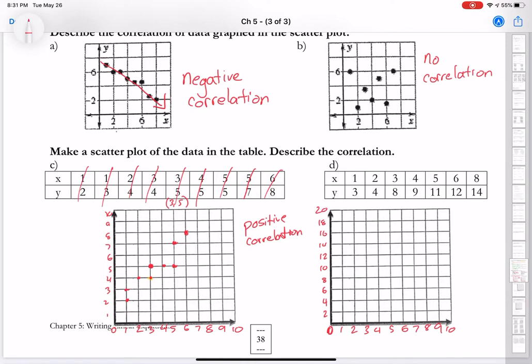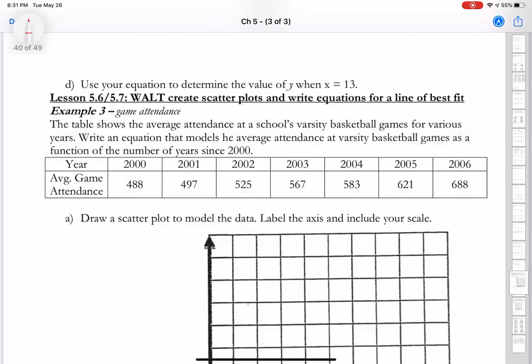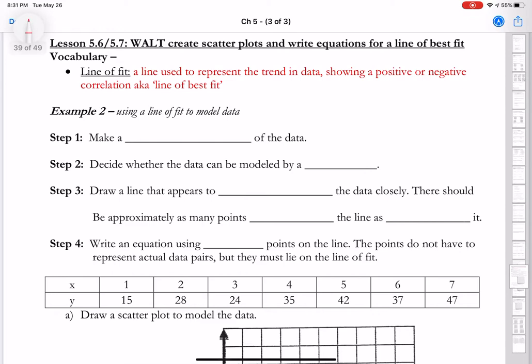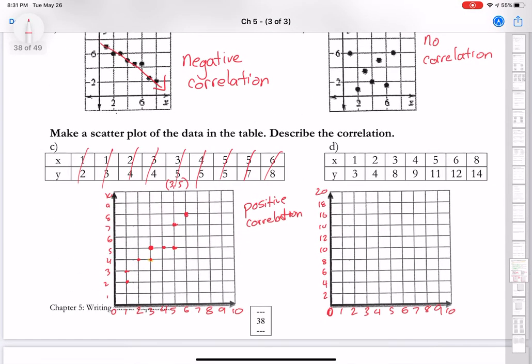So now this one, it's 1 comma 3. Well, I have 1. Oops. You know, I lose the page sometimes. That happens. There we go. Okay. So this is 1 comma 3. 1, but if I notice there's no 3, so I'm going to have to go right in between this 2 and 4.